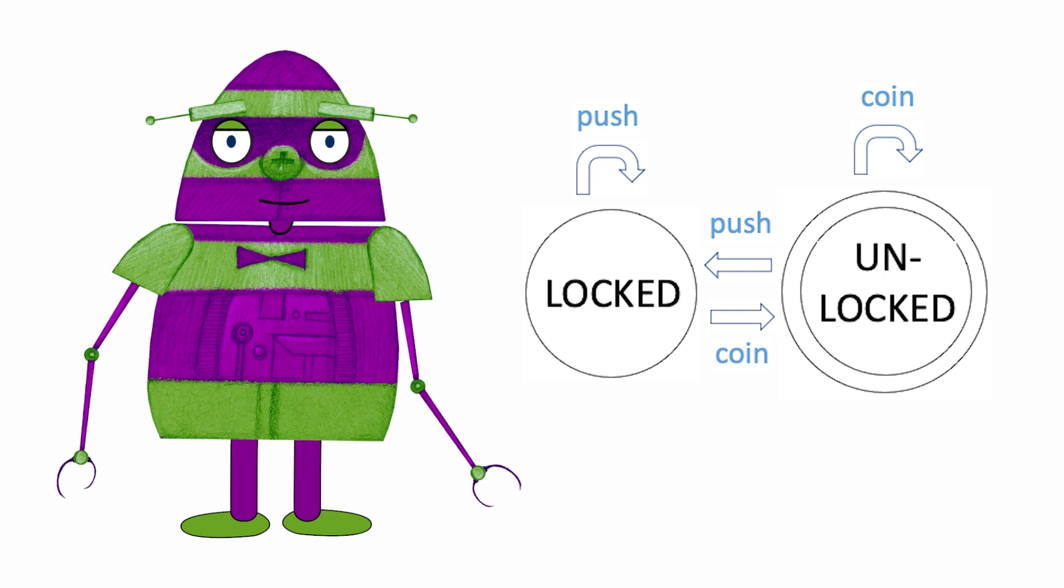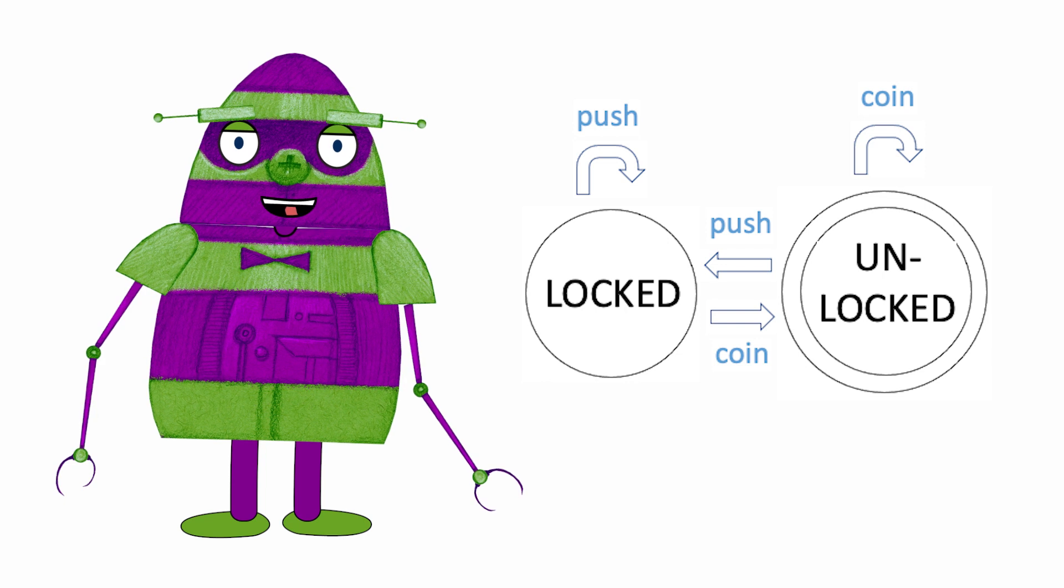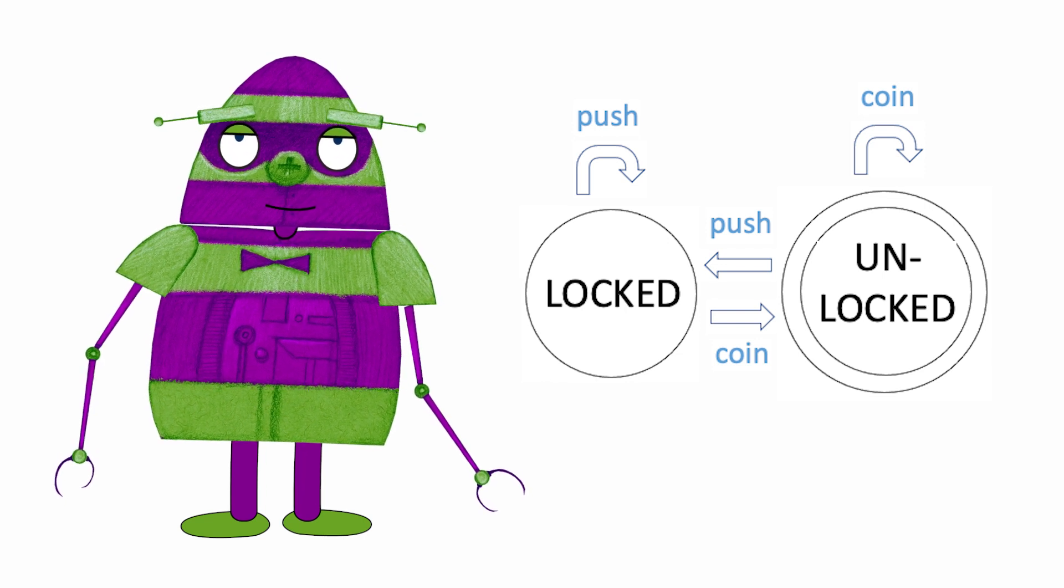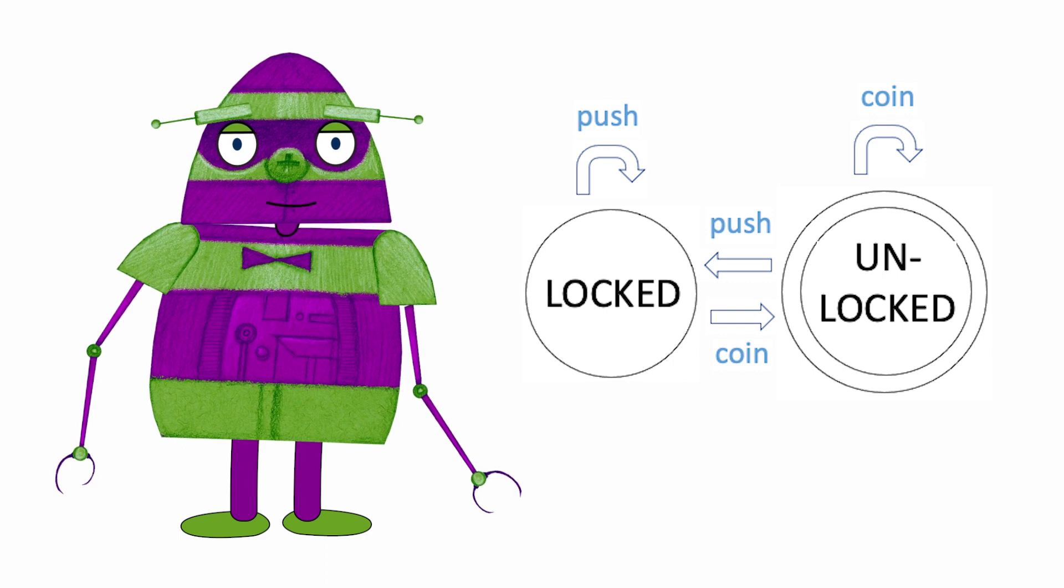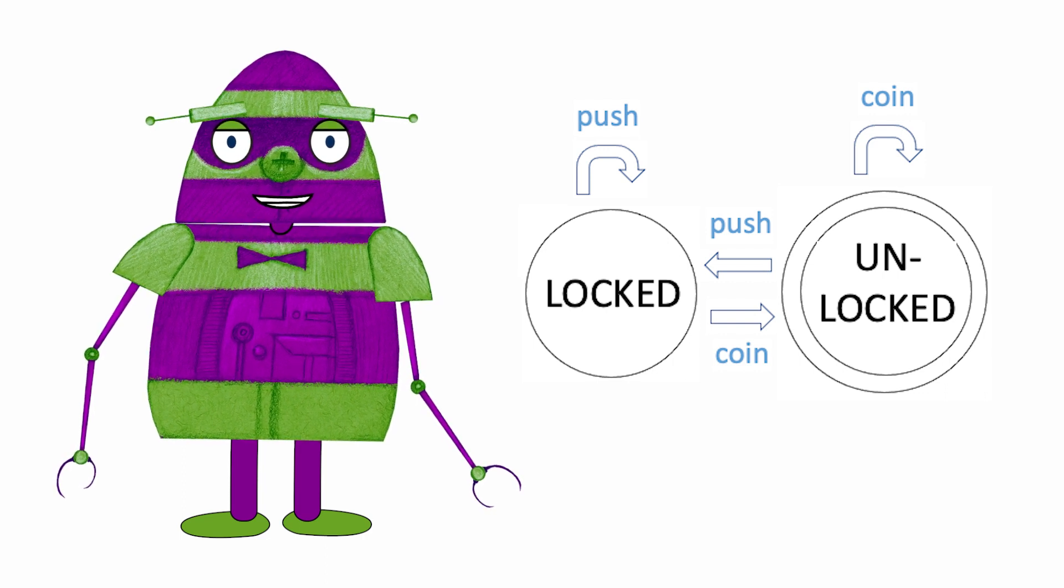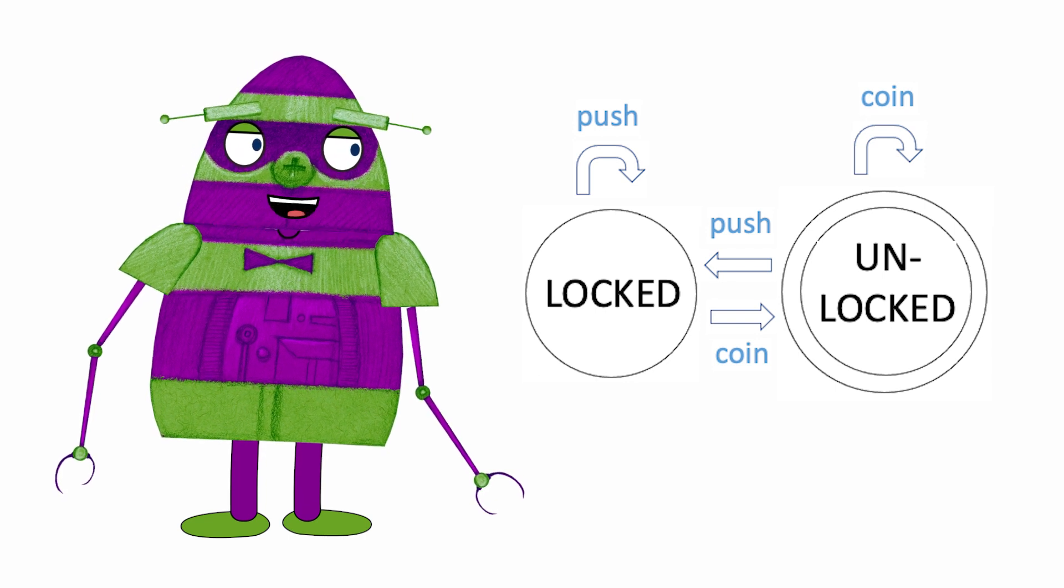This diagram is an abstract representation of the mechanical logic of a turnstile. When trying to understand how machines work, it helps to represent their states, the inputs that affect their states, and the transitions from one state to another in abstract ways.